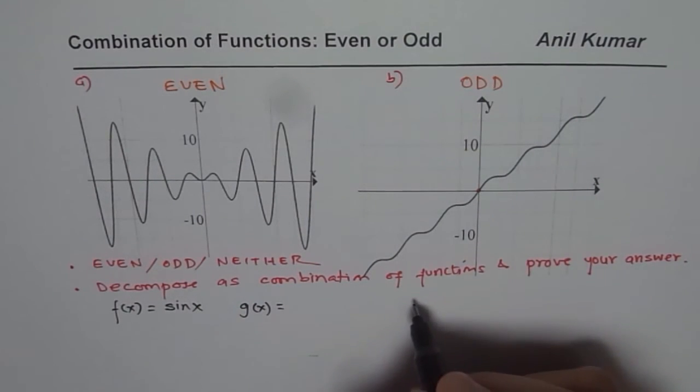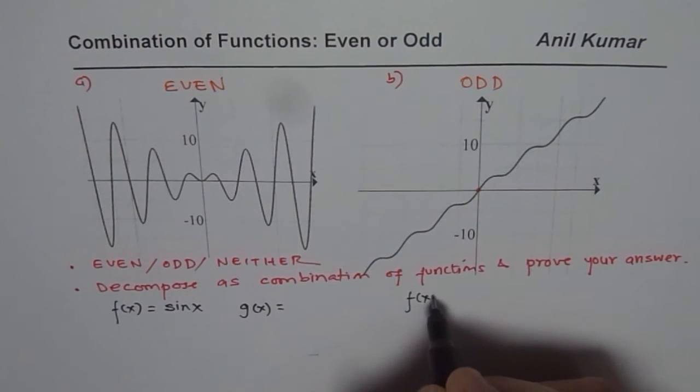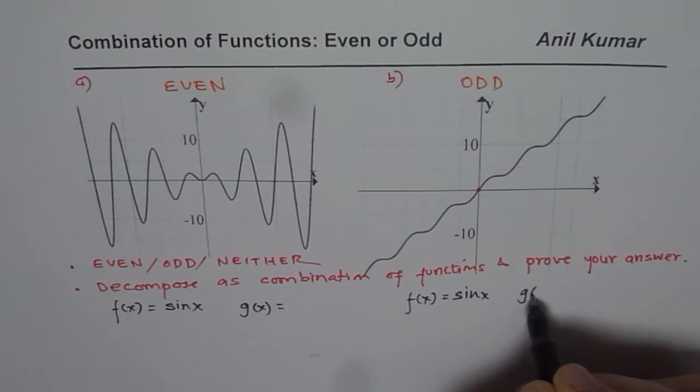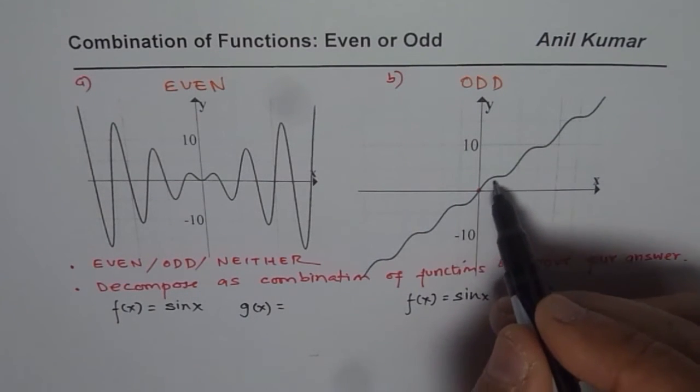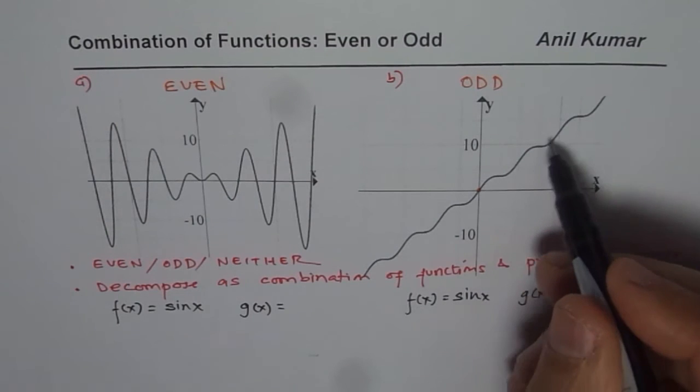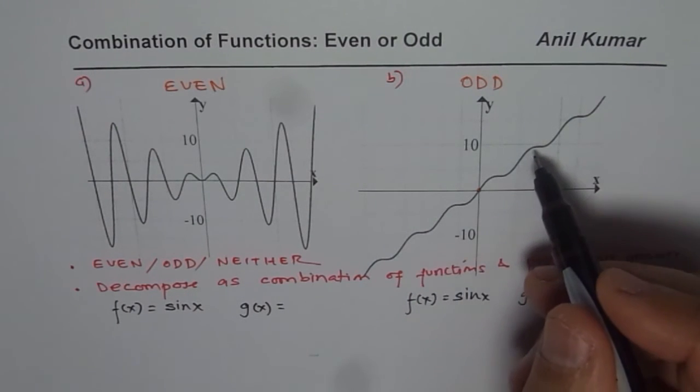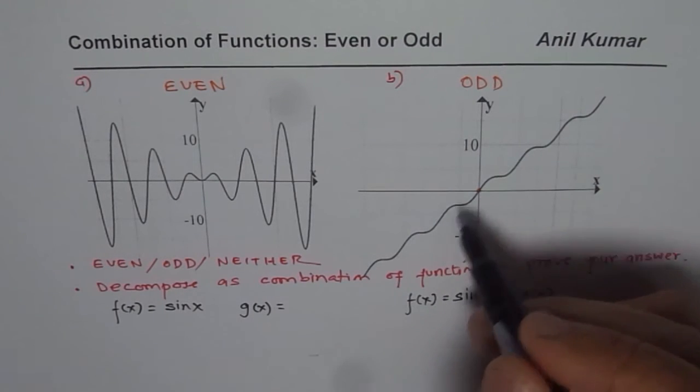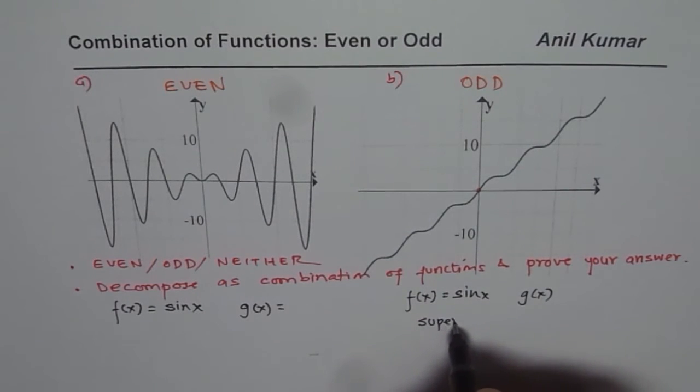Here again let me say this is sine function f of x equals to sine x. That is good. Now what is g of x? g of x could be a line since it is riding over a line. So that could be the case. Now that's superposition right. So it is superposition.